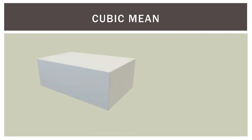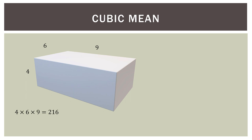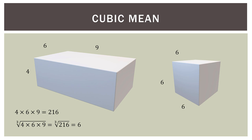Now let's do it the right way. Our original box has sides 4, 6, and 9, with a volume of 216. We take the product of those three sides and then take the cube root — because we're dealing with three dimensions. The cube root of 216 equals 6. Now if we take that 6 and create a perfect three-dimensional cube — 6 times 6 times 6 — we get a volume of 216. So we've taken the average of the three sides to create a perfect cube that returns the same volume.